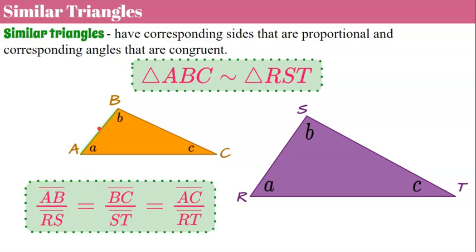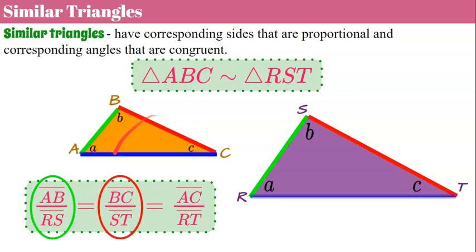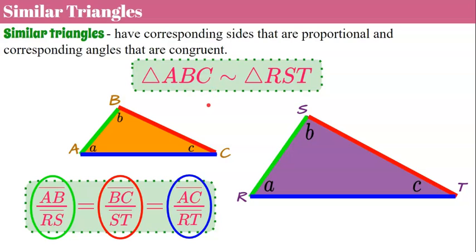Side AB corresponds to side RS and that's our first ratio — AB and RS are the first two letters of each triangle's name. The second set of corresponding sides are BC and ST, which is the second ratio. And our third pair is AC and RT — first and last letters of each name. The order they appear in the triangle's name helps you determine which sides are corresponding.